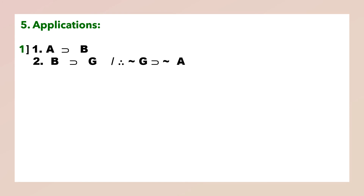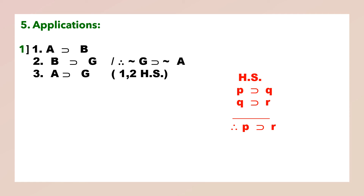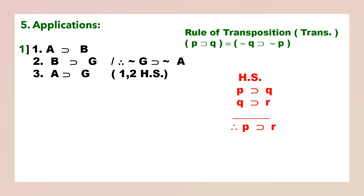Application: A implies B, B implies G. You can see that B is common, so you apply the rule of hypothetical syllogism: P implies Q, Q implies R, therefore P implies R. So A implies B, B implies G, therefore A implies G. This is HS, steps 1 and 2. Now you interchange the antecedent and consequent by negating both of them — that is the rule of transposition. We have applied transposition to the third statement and arrived at the conclusion.